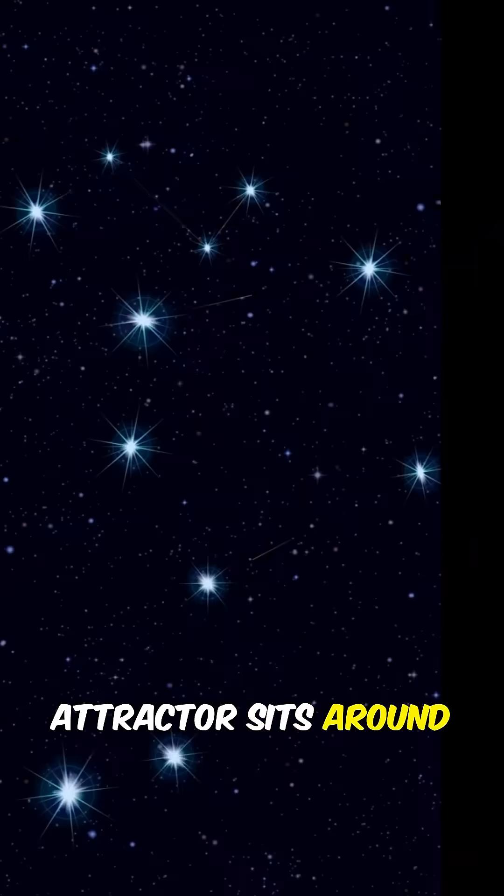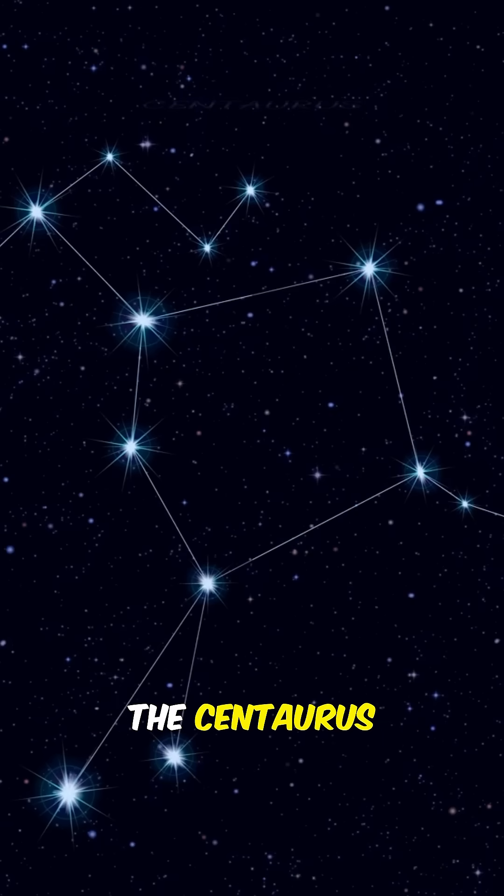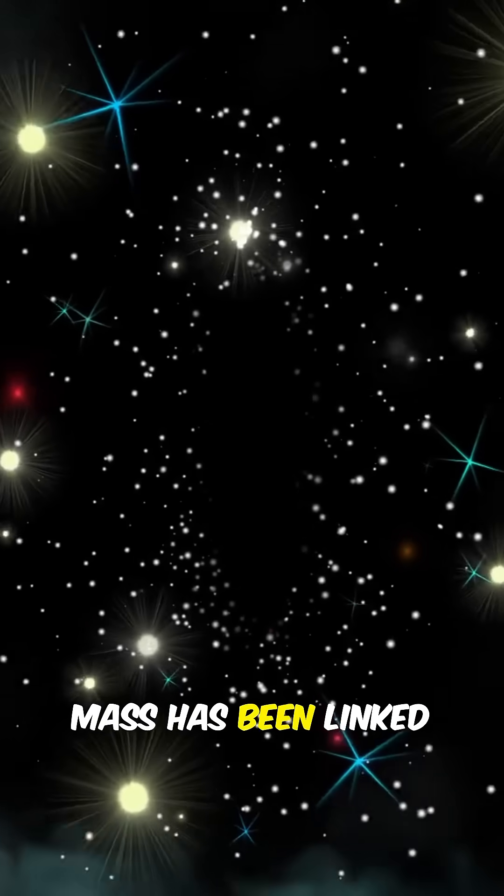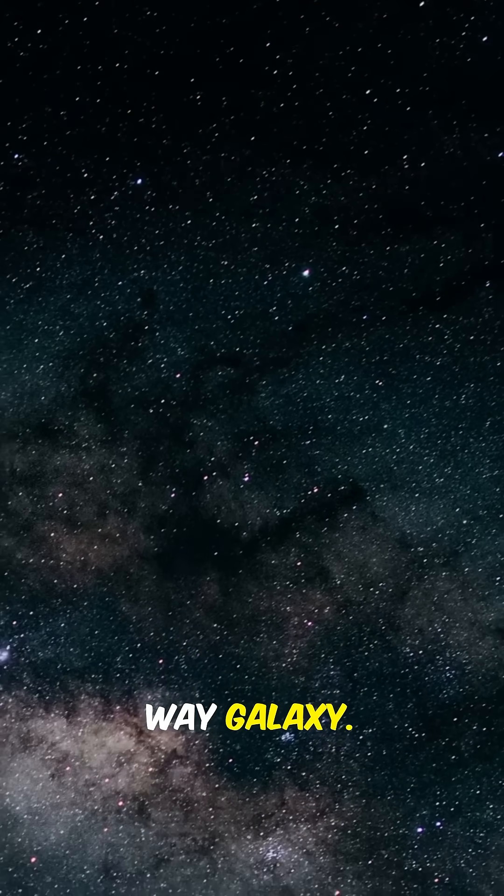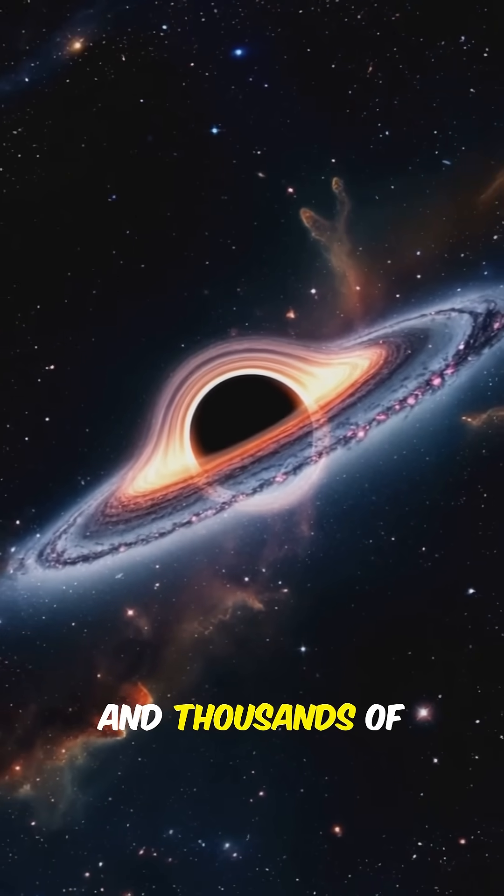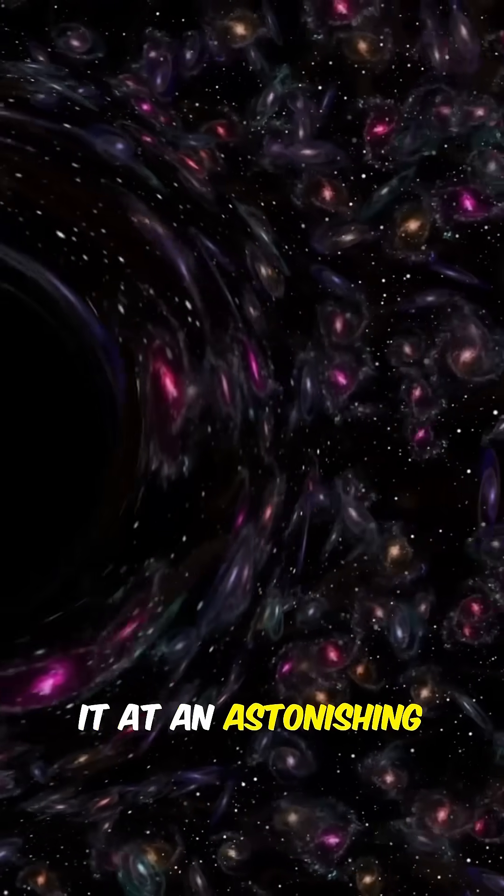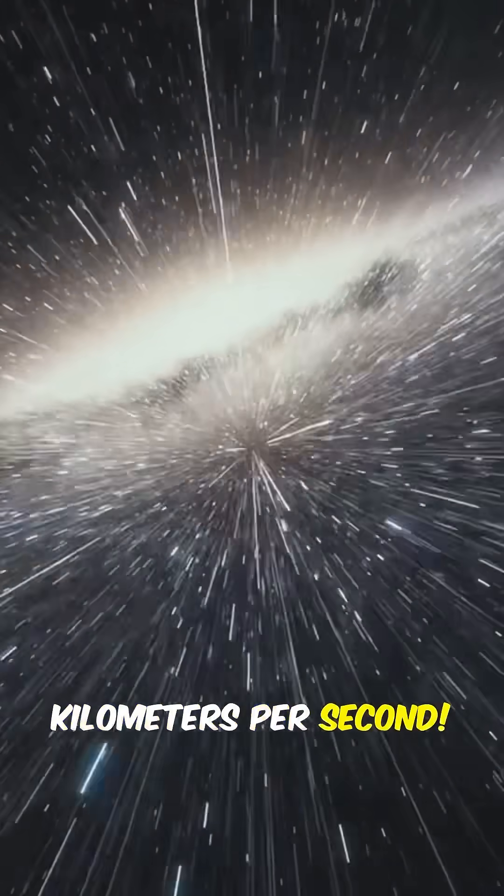The Great Attractor sits around 200 million light-years away in the Centaurus constellation, and its mass has been linked to the movement of other galaxies across the sky, like our own Milky Way galaxy. It's so strong it's dragging the Milky Way and thousands of other galaxies toward it at an astonishing 600 kilometers per second.